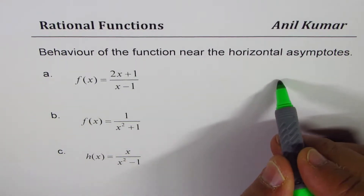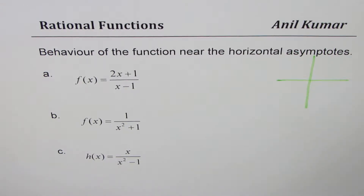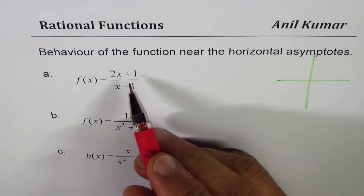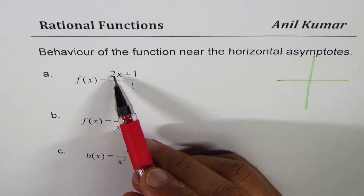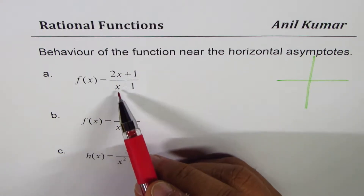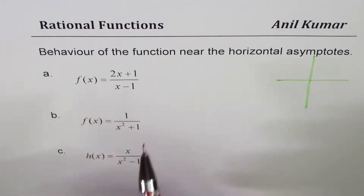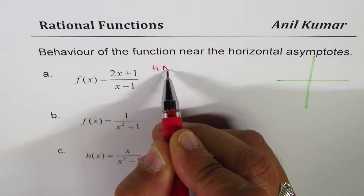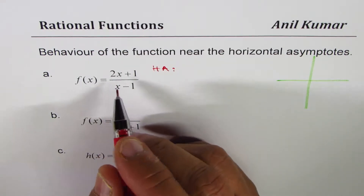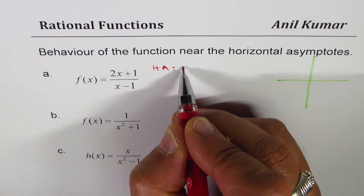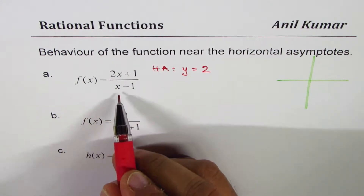Now let's see the first one. We'll make a small sketch also. First question is how do you find horizontal asymptote? We look at the degrees of numerator and denominator. If the degrees are the same, then horizontal asymptote is ratio of leading coefficients. In this case, horizontal asymptote is y equals to 2.